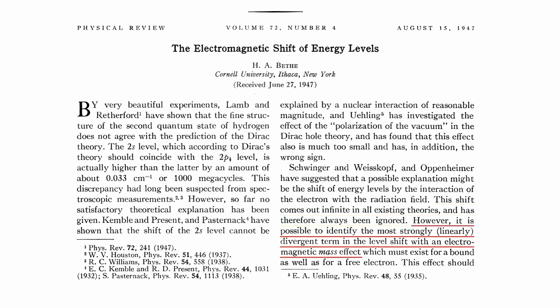He continues: however, it is possible to identify the most strongly divergent term in the level shift with an electromagnetic mass effect. This is the quantum version of the classical electromagnetic mass effect we described in video 5. The solution Bethe suggested in this paper was the same we considered in that video: renormalization of the electron mass.